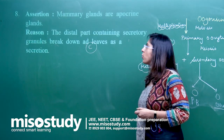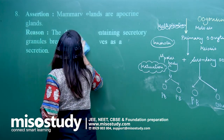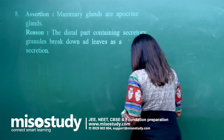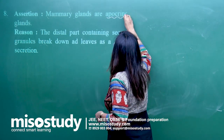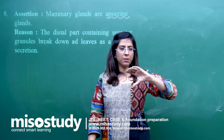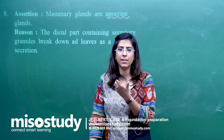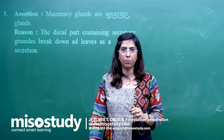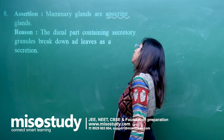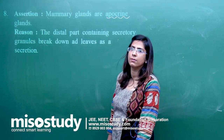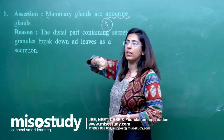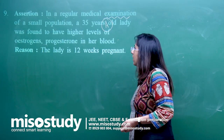Question 8: mammary glands are apocrine glands — assertion. Yes, mammary glands are considered apocrine glands — that is 100% right. What does apocrine gland mean? During secretion, some part of the gland cells are also pinched off along with the secretion. The reason states: the distal part containing secretory granules breaks down and leaves as a secretion. This is absolutely right and is a correct explanation. So for this I will go for option A.